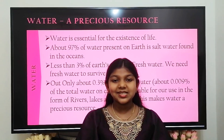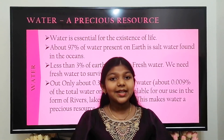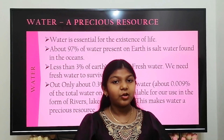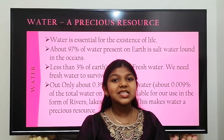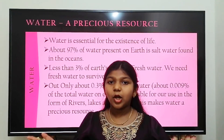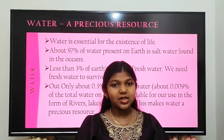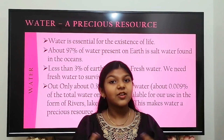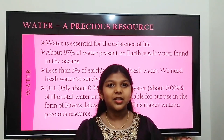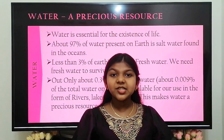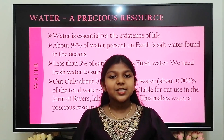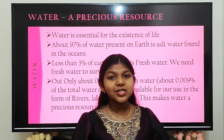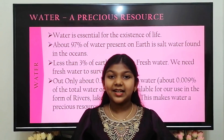Water is essential for the existence of life on earth. It covers three-fourths of the earth's surface and constitutes 70% of our body. About 97% of water found on earth is salt water found in oceans. Less than 3% of water found on earth is fresh water. We need fresh water to survive. But 70% of the world's fresh water is frozen in ice caps and glaciers, and 29% of the world's fresh water is locked deep inside the ground.